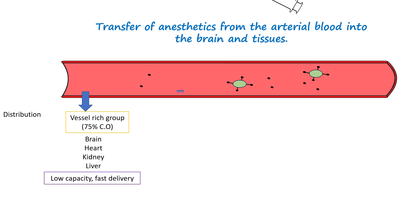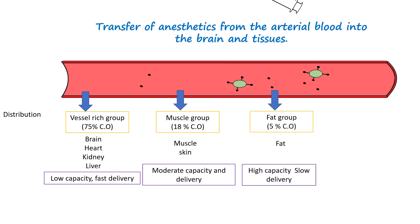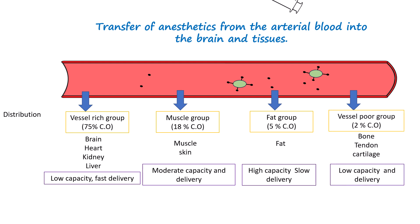The muscle group, which has moderate perfusion and capacity, absorbs the anesthetic more slowly but still contributes significantly to distribution. The fat group, with its low perfusion but high capacity, absorbs the anesthetic slowly and takes much longer to reach equilibrium. Finally, the vessel-poor group, which has very low perfusion, absorbs the anesthetic minimally and plays a negligible role in the initial distribution phase.